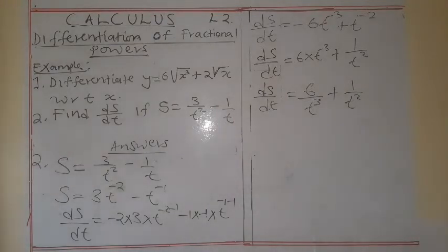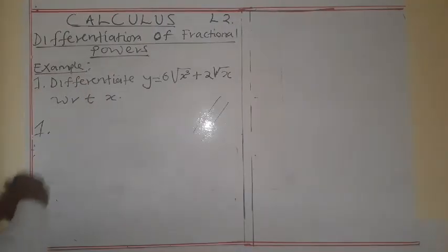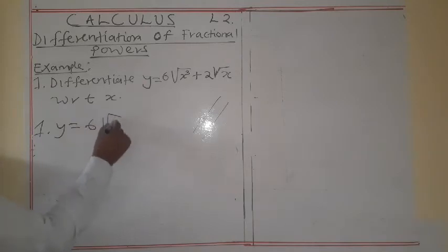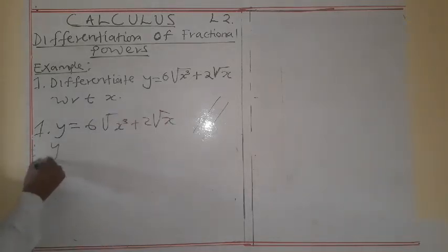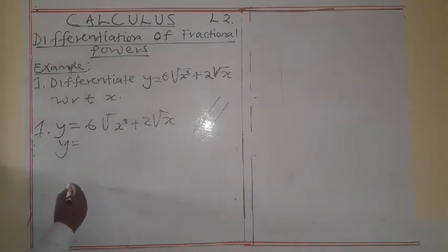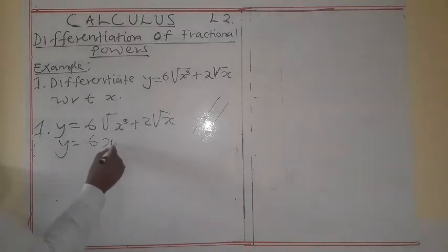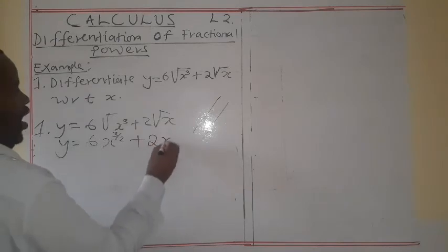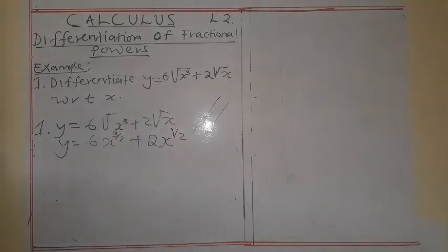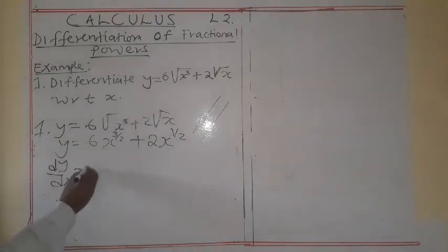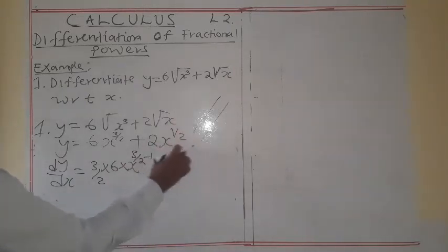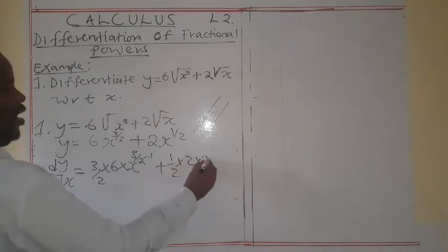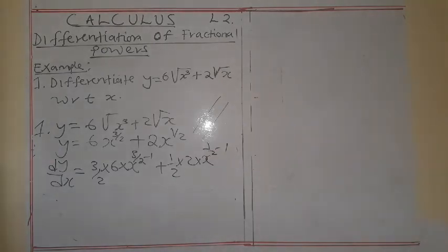So that's all for the second one, then we go to number 1. We have y is equal to 6 times the cube root of x squared, plus 2 times the square root of x. So we write first: y is equal to 6x to the power 3 over 2, because 2 is the square — so the power is being placed here — plus 2x to the power half, which is a square root. Then you differentiate. So dy/dx is equal to 3 over 2 times 6 times x to the power 3 over 2 minus 1, plus 1 over 2 times 2 times x to the power 1 over 2 minus 1.